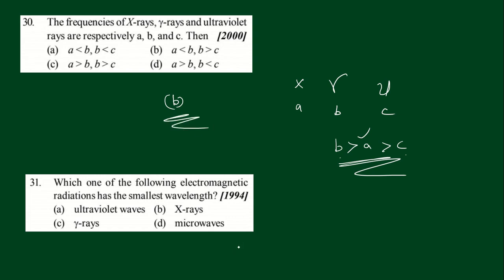Number 31: Which one of the following electromagnetic radiations has the smallest wavelength?